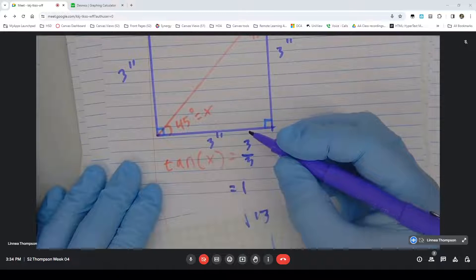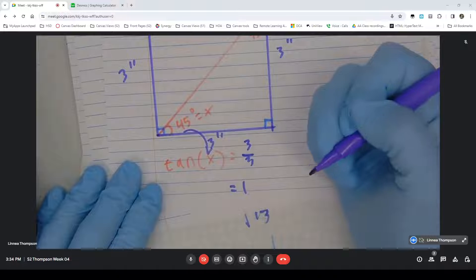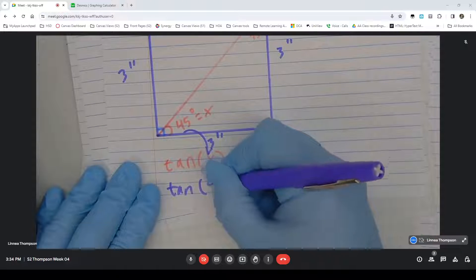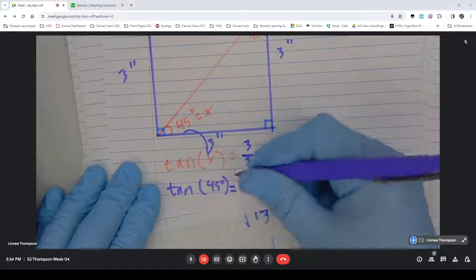So in this case, the tangent of this 45 degrees is 1.